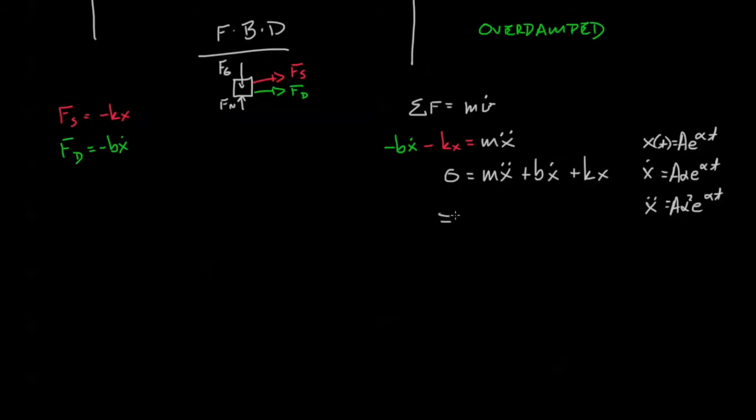So what do we got? We got mAα² and just for kicks e^(αt) I'm going to say that's equal to the triangle some delta plus bAα and that's just because I want to save space plus kA delta equals zero.